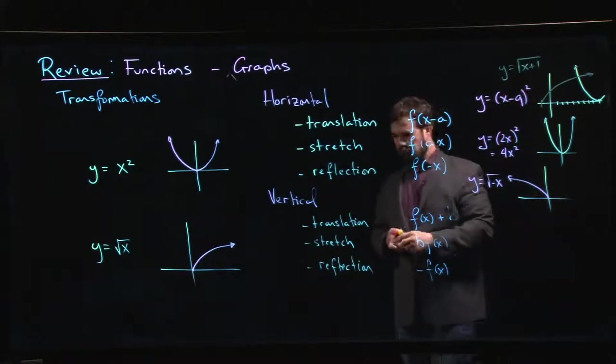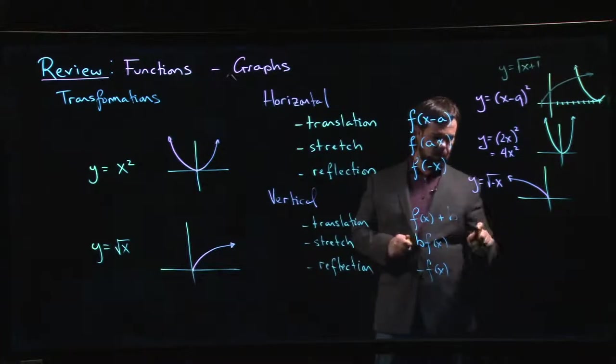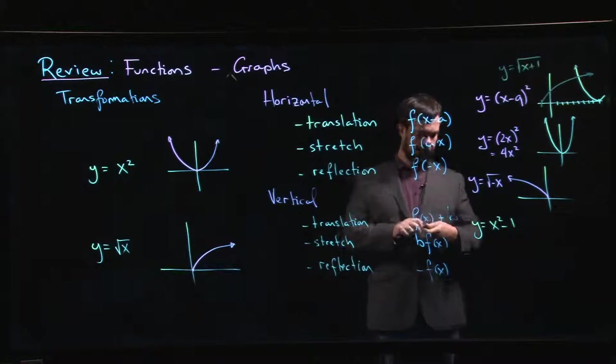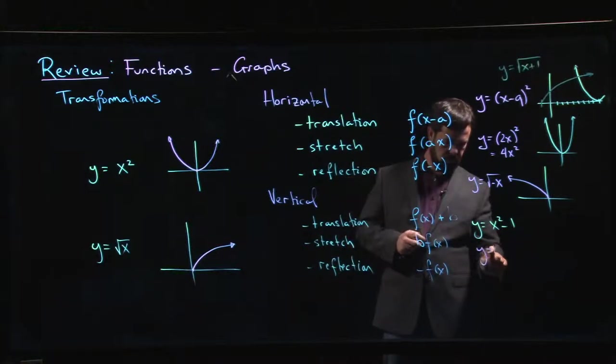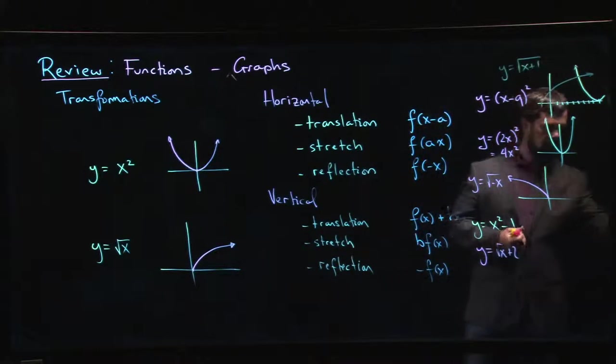And for the vertical translations I could do something like y is equal to x squared minus 1, or I could do y is equal to, let's say, square root of x plus 2.